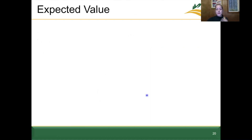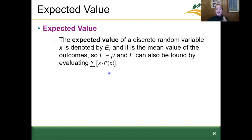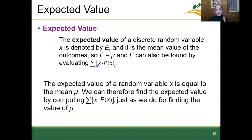The expected value of a discrete random variable x is denoted by uppercase E. The expected value is the mean value of the outcomes — in other words, uppercase E is equal to mu, the mean. That means we can calculate the expected value E the same way we calculate mu: the summation of our variable x multiplied by the probability of that variable. We need to sum all of these values for each variable in our data. So the expected value of a random variable x is equal to mu.